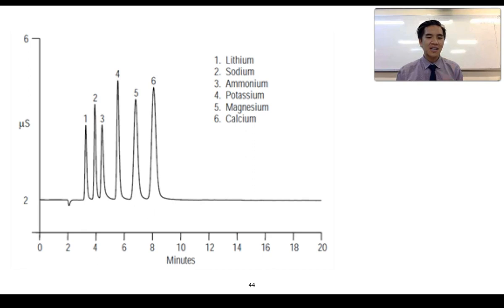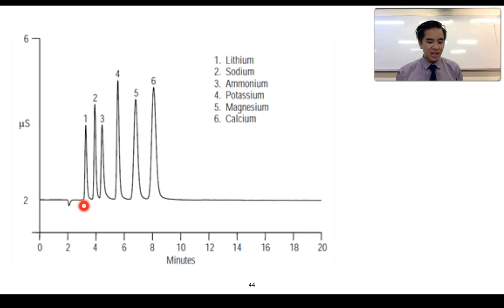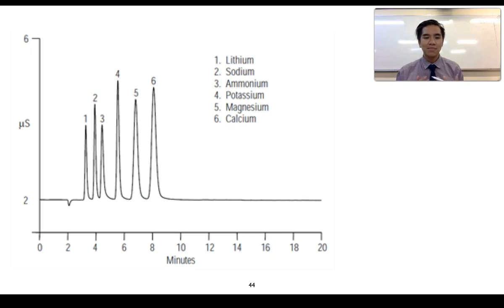Here is an example of a chromatogram for ion exchange chromatography. In this case, we can see it's a cation exchange ion chromatography because each of these six components would be positively charged ions. We can see that lithium has the shortest retention time, meaning it's formed the weakest interactions with the stationary phase. Calcium has the longest retention time, meaning it's formed the strongest interactions with the stationary phase — or in other words, it's more strongly adsorbed than all the other ions.